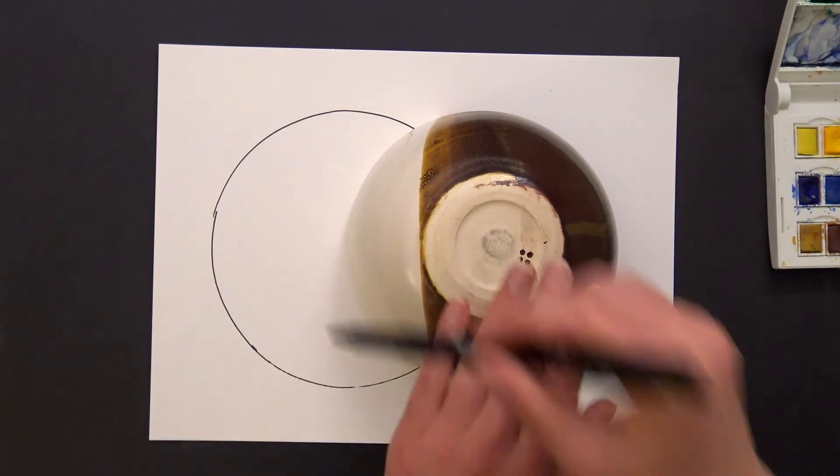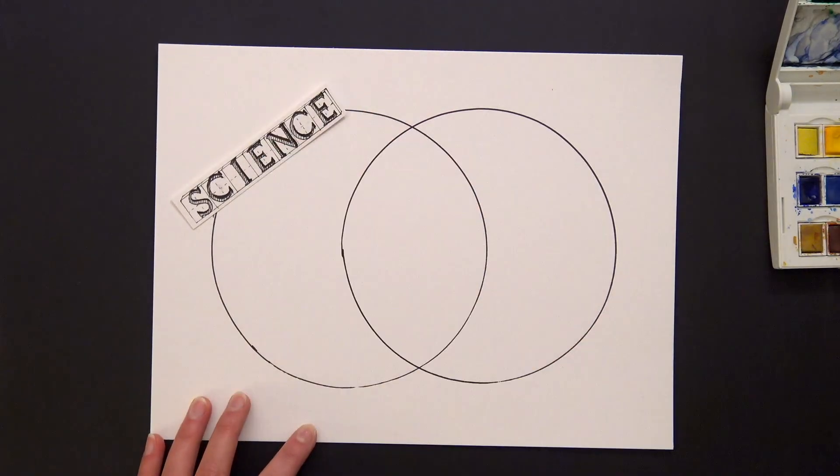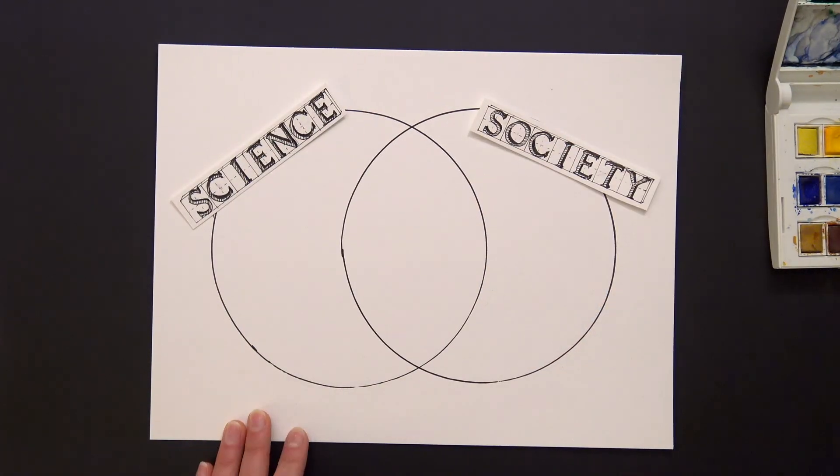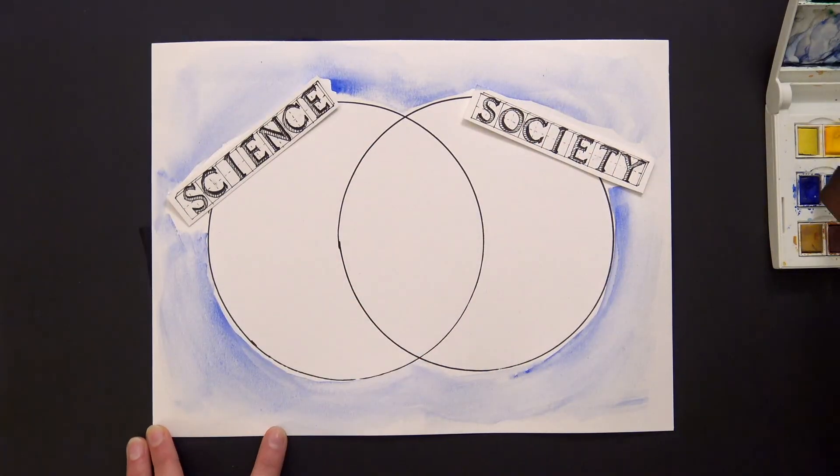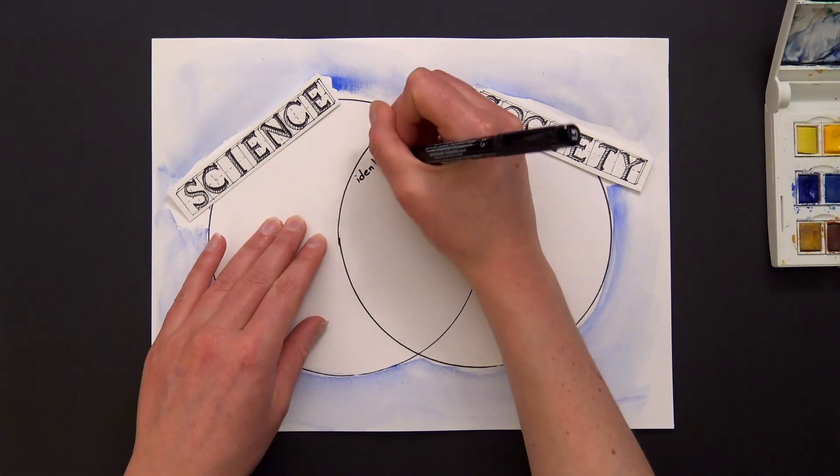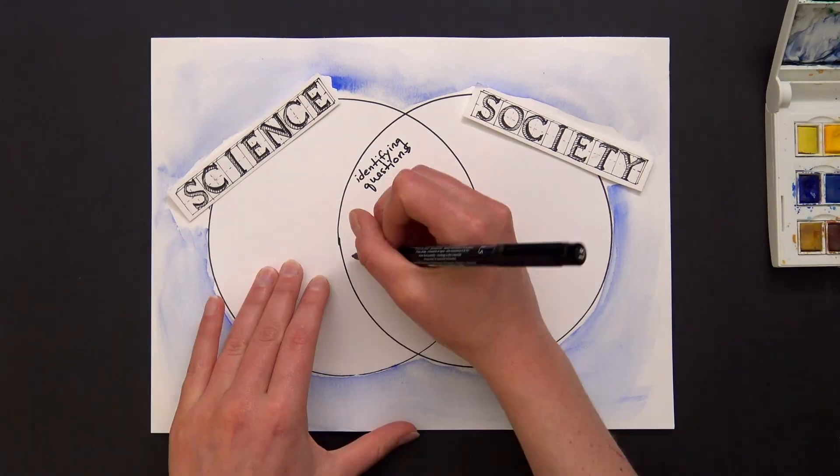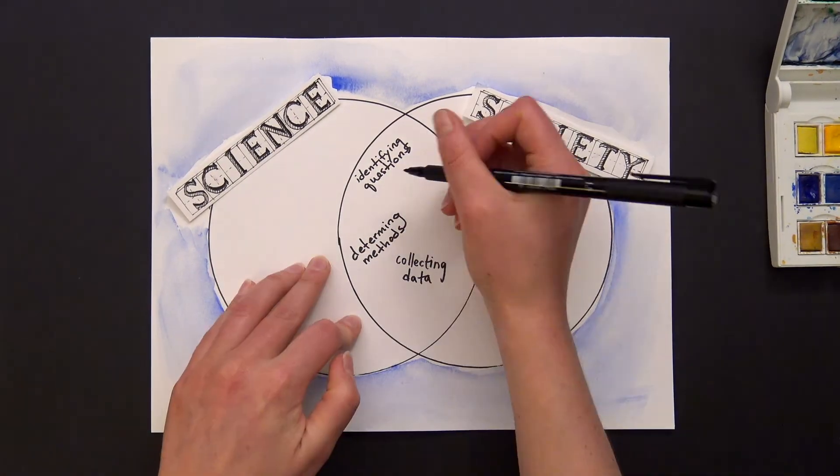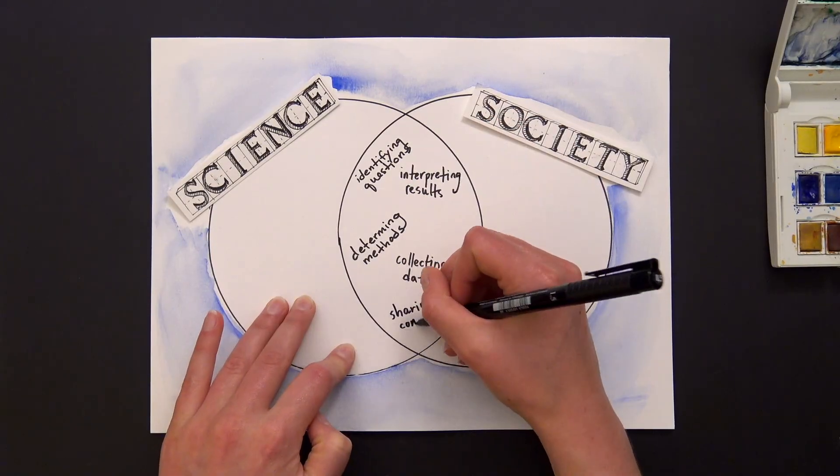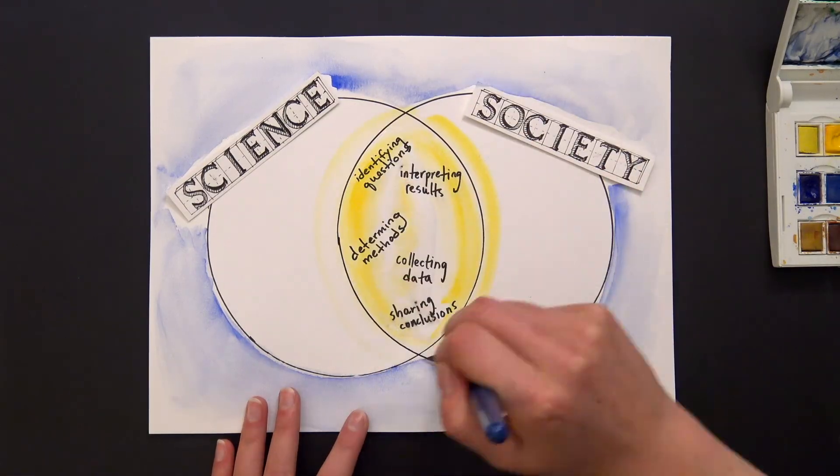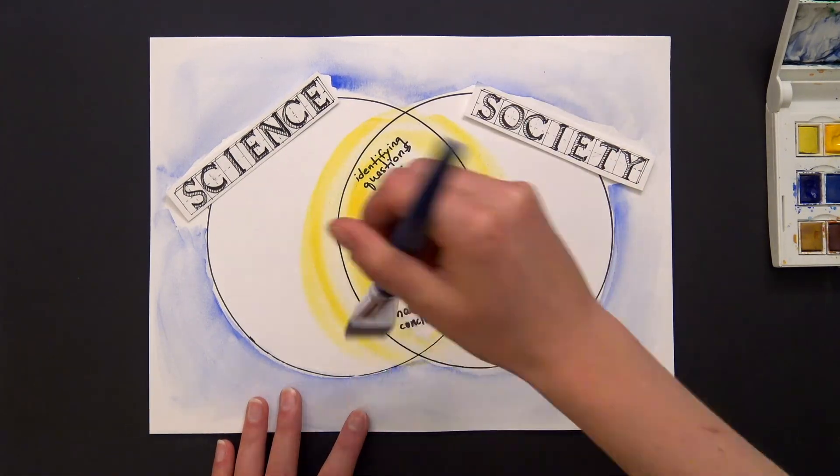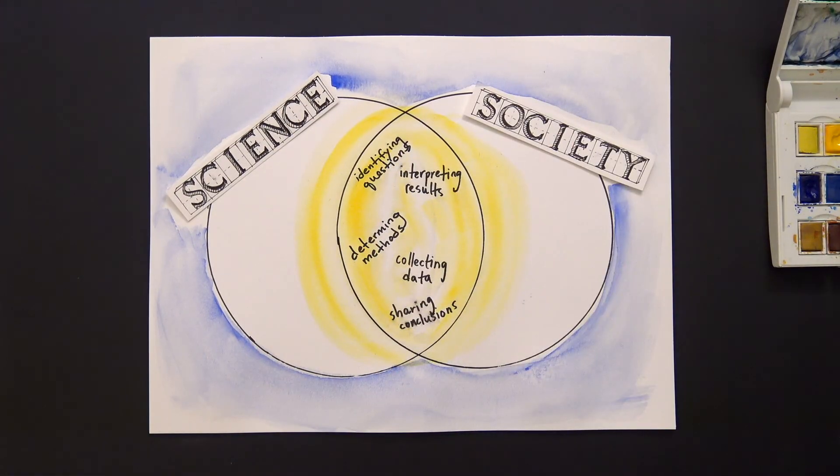More scientists are now questioning convention and integrating their science with society through collaborations with individuals that have the potential and often necessary expertise needed to generate innovation relevant for societal problem solving. This can include collaboration in identifying questions, determining methods, collecting data, interpreting results, and sharing conclusions. While scientists using this approach are still driven by scientific curiosity and a desire for discovery, they are also motivated to see their science contribute more directly to action and solutions.